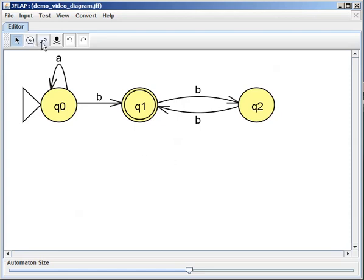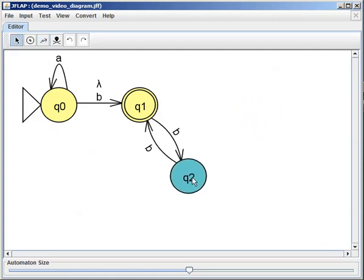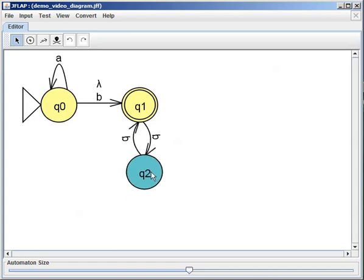I'm going to change it like we did before. I'm going to add another transition from Q0 to Q1 that gives me a free jump, a lambda jump. So Q0 to Q1, I let go, and then I either hit enter or just click, and I get that lambda. Remember, that's a lowercase lambda here in our textbook. Let's move Q2 down here again.